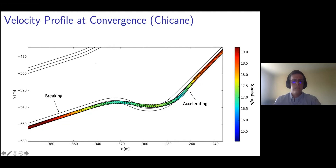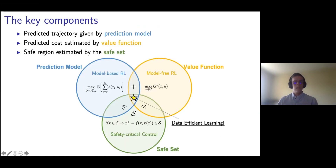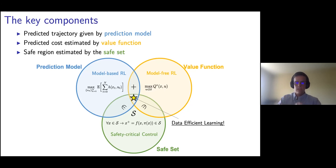In the second part of this talk, we have seen that when we design a model-based reinforcement learning algorithm where we estimate from data a prediction model, a value function, and a safe set, we can obtain data-efficient learning that can be deployed on a real vehicle. In the training process, we only use experimental data.